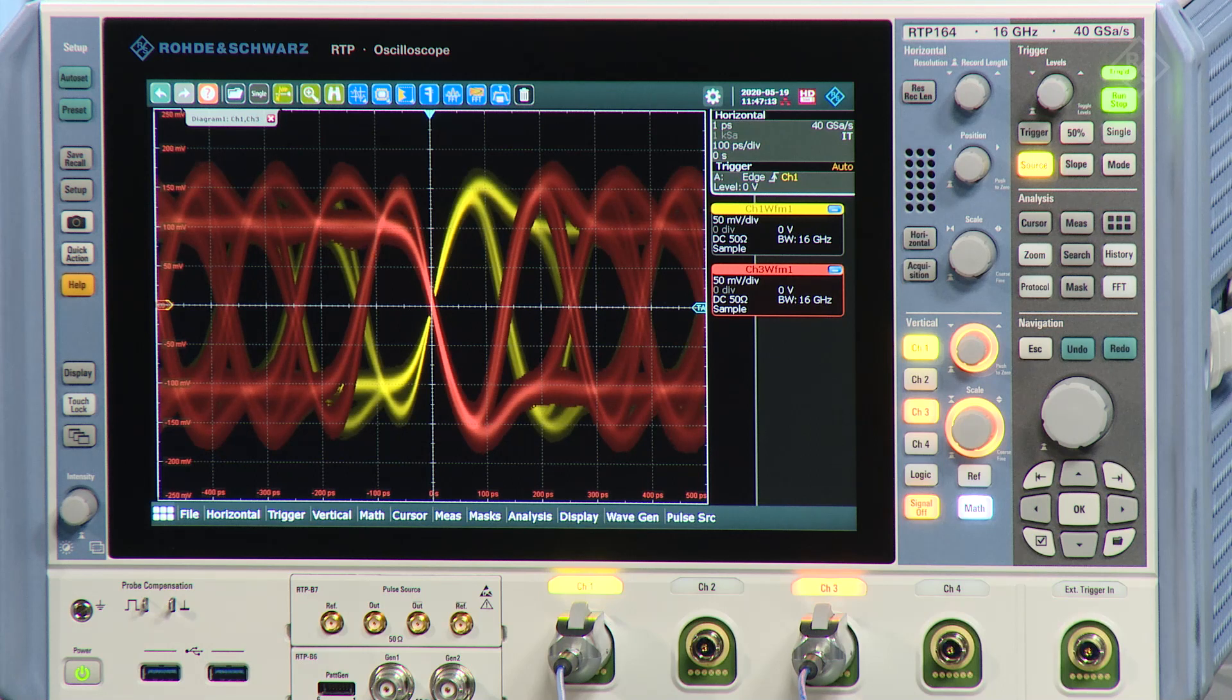So we have now on the display of the preset the two channels displayed, the P and the N. The P is in yellow, it's channel 1. Channel 3 is the N signal. But this is not really what we want. We want to have the differential signal, so P minus N, and we want to have it displayed as an eye pattern.